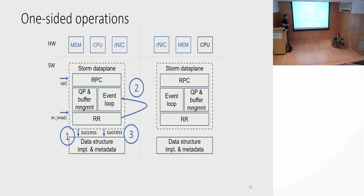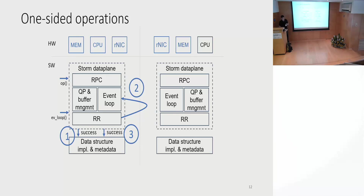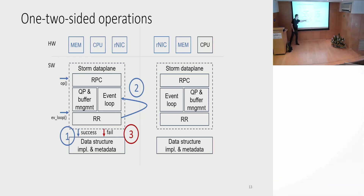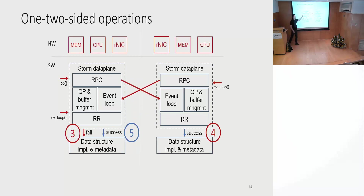A better path is to do a lookup locally, and if this succeeds we do a one-sided read — in that case, the owner's CPU is not involved in the transaction. Once we finish, we verify the data is correct. It could also be the case that we made a guess that was incorrect: we check at the end, see that we failed, and then fail over to RPCs. We do an RPC and then check that the data collected is what we were looking for.